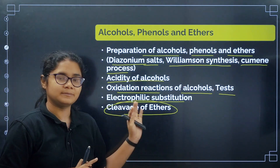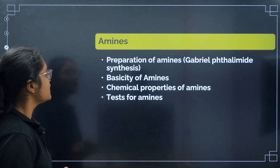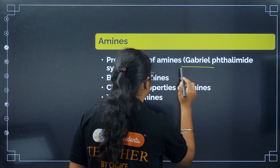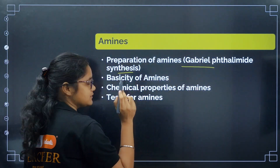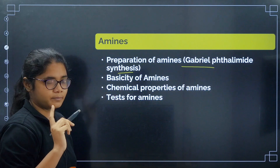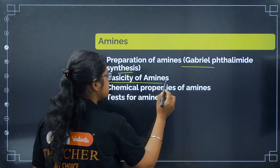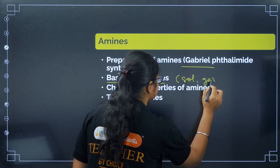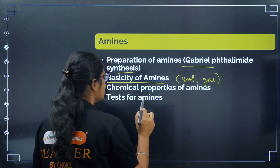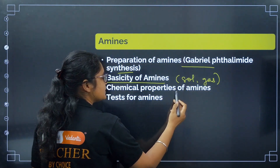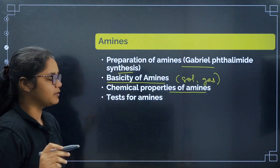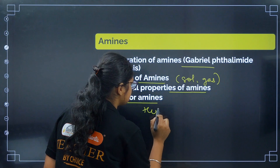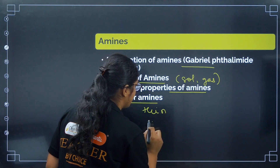For ether cleavage reactions with HI, know which product will be a haloalkane and which will be an alcohol. Practice questions from these topics. Now in Amines: cover preparation of amines, especially Gabriel phthalimide synthesis — revise this thoroughly — basicity of amines in solution and in gaseous phase, and chemical properties including reactions of amines.